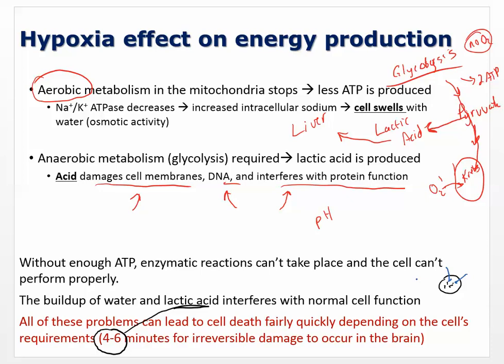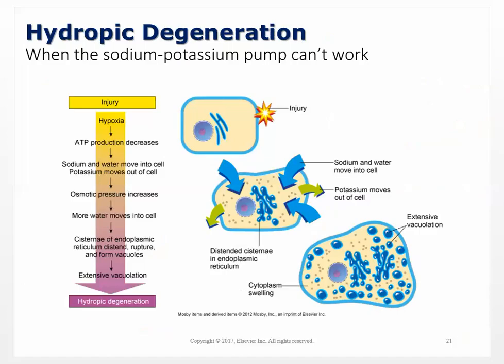This is what kills cells — this is what happens when someone has a stroke. The cell swells because of lactic acid buildup and water moving in. All of this happens because you don't have enough ATP. The ATP is needed for cells to function. Brain cells are high-demand ATP users, so they're the ones that get hit first, earliest, and quickest. We call this hydropic degeneration — the sodium-potassium pump can't work, sodium and water move into the cell, the membrane is damaged, and swelling occurs.